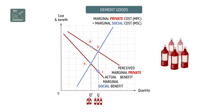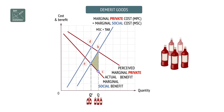Here, we assume there is no external cost of production, only consumption. The welfare loss is area A, B, C. Several remedies exist, including taxation of demerit goods and imposing minimum prices. Demand contracts from B to D.